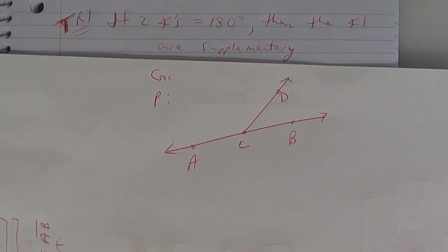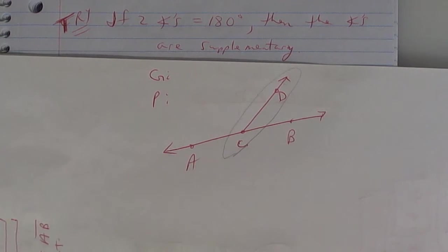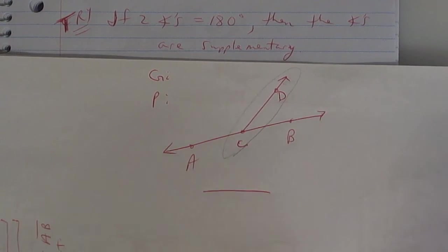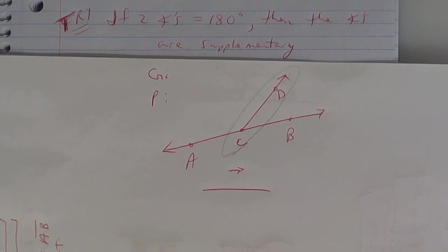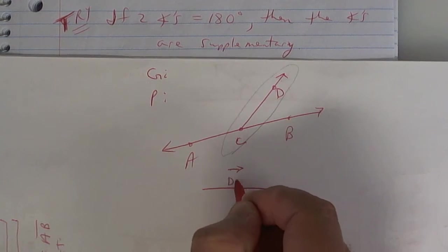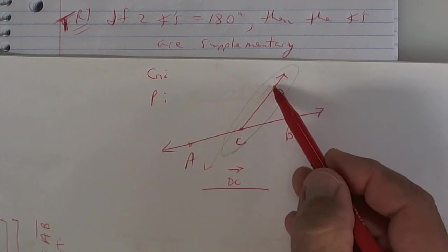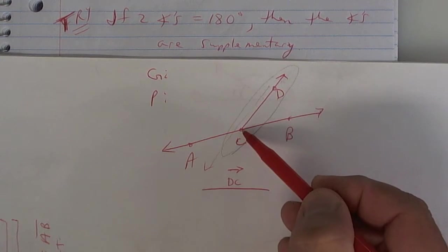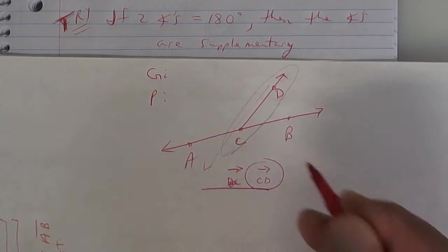Now, just to make sure you understand, I want you to name this ray right here, because it was on the test, or it might be on another test. So, name that ray, just for the heck of it. How would you name it? Right. But what if I said DC? Would DC be correct? No, because you're starting at D and going that way, whereas we want to start from C. So, she was right. It should be ray CD. Excellent job. Is everybody clear on that? It's not hard. It's just notation.